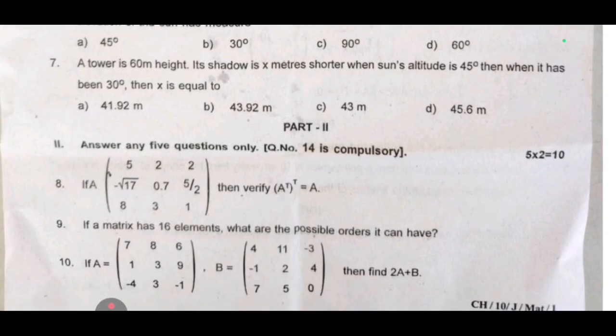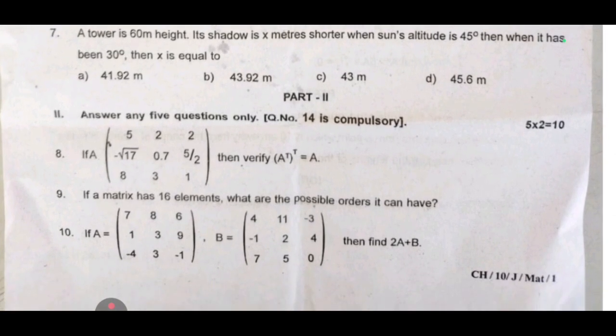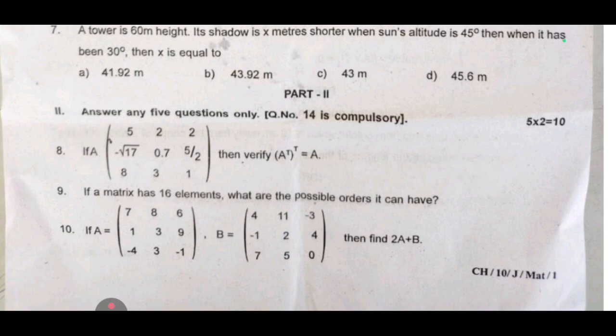This is Part 2, two marks are put through the ring. Question number 14 on the compulsory: eighth one is if A is equal to then verify A transpose O transpose is equal to A.